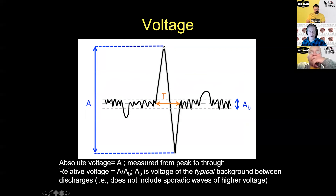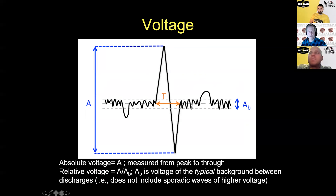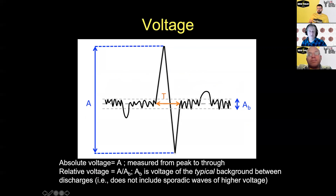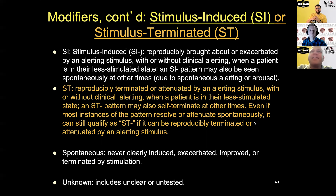Voltage refers to the voltage of periodic discharges, measured peak-to-trough for each discharge. We also discuss relative amplitude: the amplitude of the discharge compared to the background amplitude, which is still peak-to-trough of the majority of the background, ignoring any outlying waves.